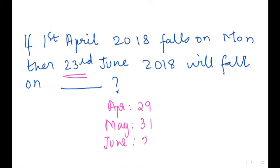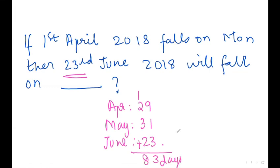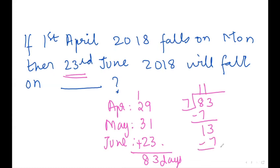For June, we consider only 23 days because they are talking about 23rd June. Adding all of these: 29 plus 31 plus 23 equals 83 days. In a week there are 7 days, so we divide 83 by 7.